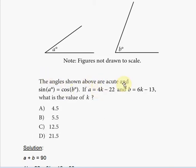It gives you two figures that are not drawn to scale and it says that the angles shown above are acute. So angles a and b are acute and sine of a is equal to cosine of b. If a is equal to 4k minus 22 and b is equal to 6k minus 13, what is the value of k?